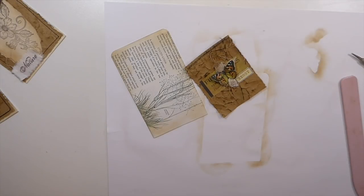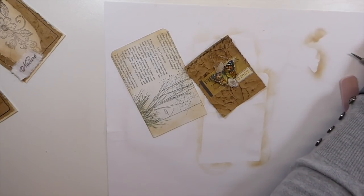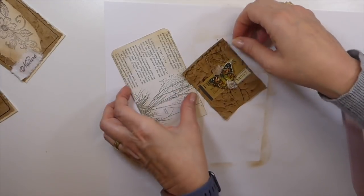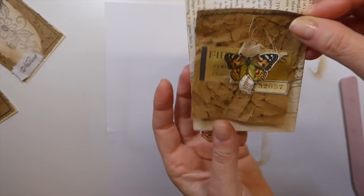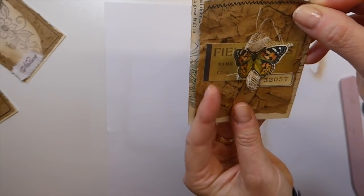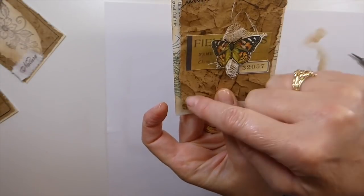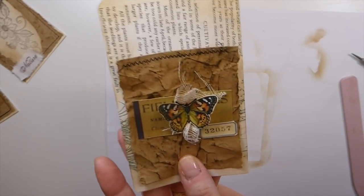And at this point guys, I'm going to have to stop the camera and I'll be back because I'm going to now take this to the machine and just stitch the three sides. That way I'll form a pocket. Be right back.